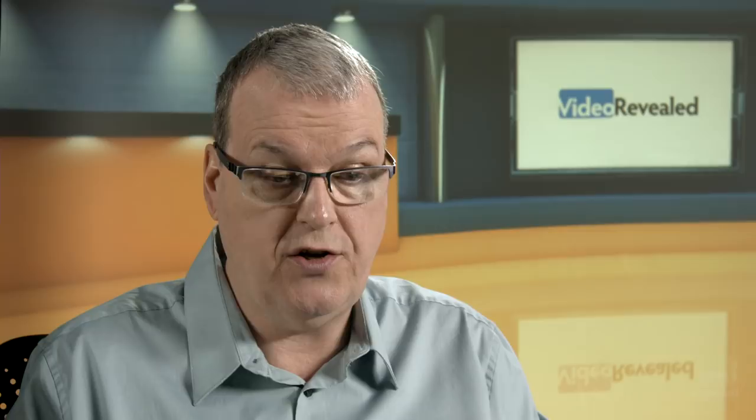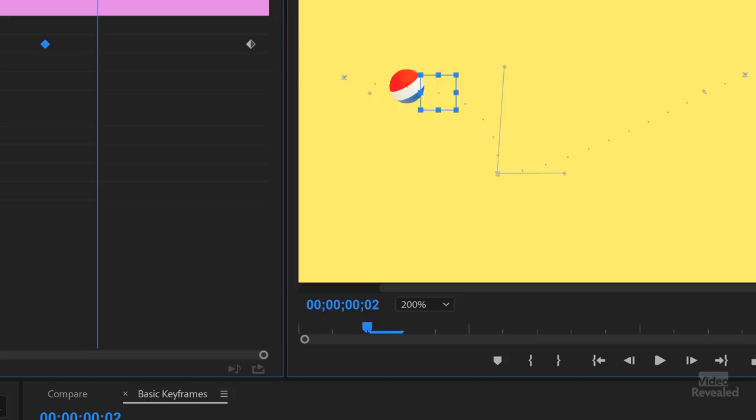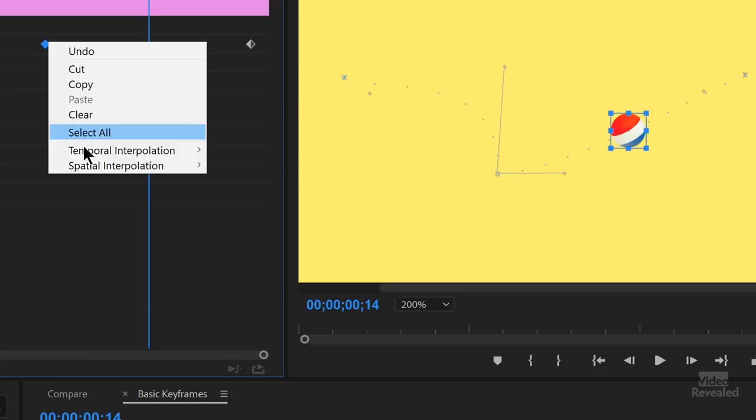But if we wanted to, we could change this. So if I looked at this and change this to Bezier, that means that we can change one handle and not the other. So now we've got an animation that comes up, drops down, and then continues that way. If we put it back on Auto, it will smooth itself out. So it hasn't changed where this part is. It's just changed the entrance and the exit of those keyframes.